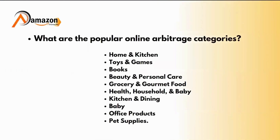What are the popular online arbitrage categories? These include Home and Kitchen, Toys and Games, Books, Beauty and Personal Care, Grocery and Gourmet Food, Health, Household and Baby, Kitchen and Dining, Office Products, and Pet Supplies. Those are the popular categories in online arbitrage.